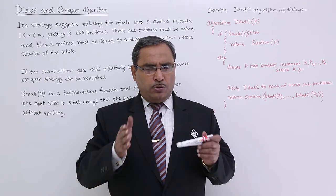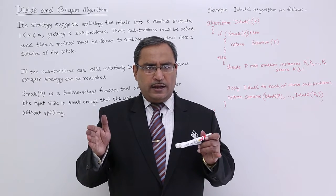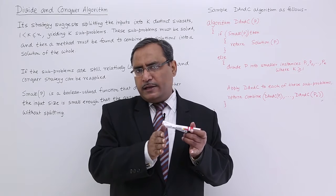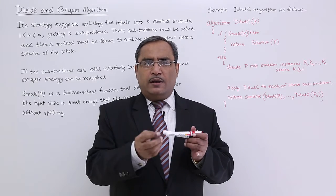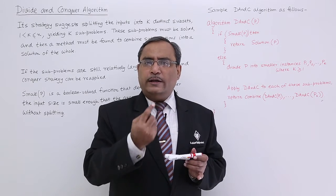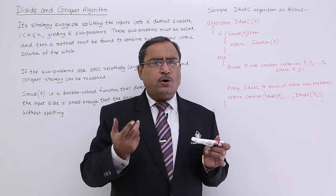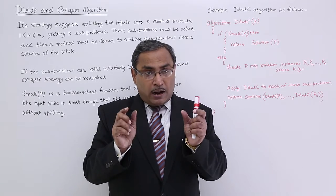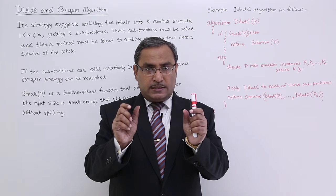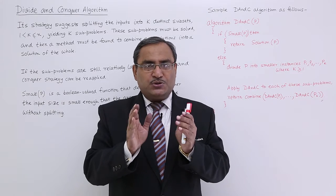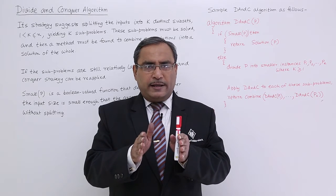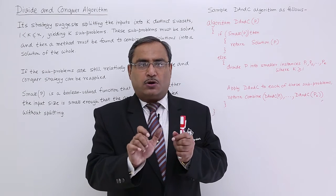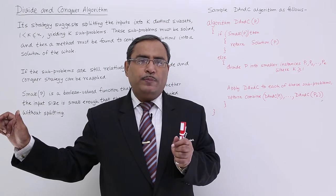We know that in case of merge sort, we go on dividing this array content into subarray, subarray, subarray in such way that ultimately one subarray will be containing one data. One data means it is already sorted. We shall merge two such subarray containing one data each, so that I will be getting one subarray containing two data, they are sorted. In this way the problem will be processed.